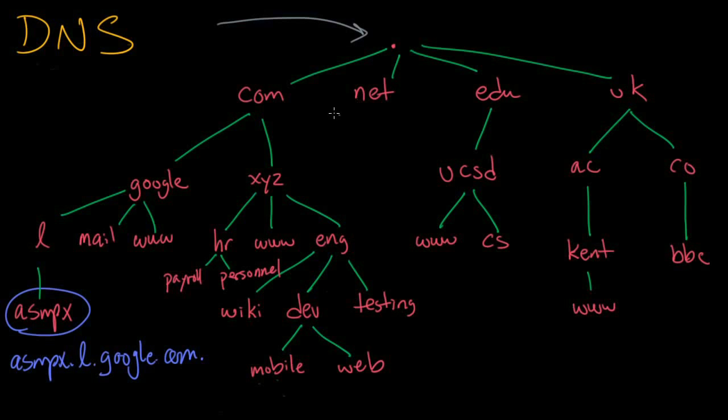Once again, the query comes in to the top. It's the root zone. The root zone hands off the query to the com zone. The com name server hands off the query to the google.com zone, which, if you remember, includes this entire piece over here, and the answer is found right away. This answer is then sent back to whatever computer was issuing the request.